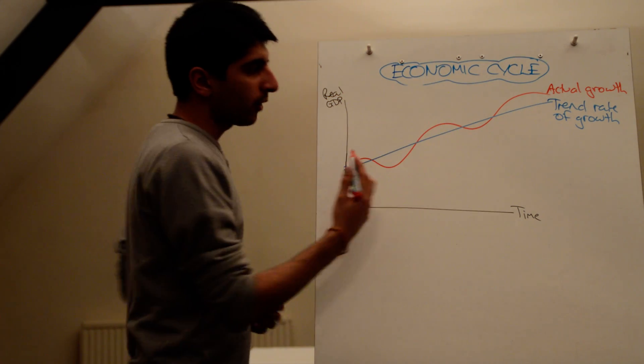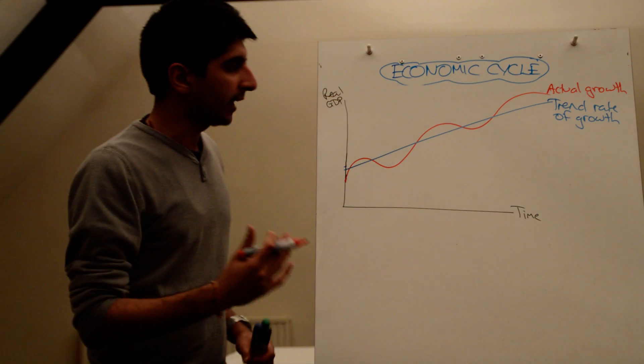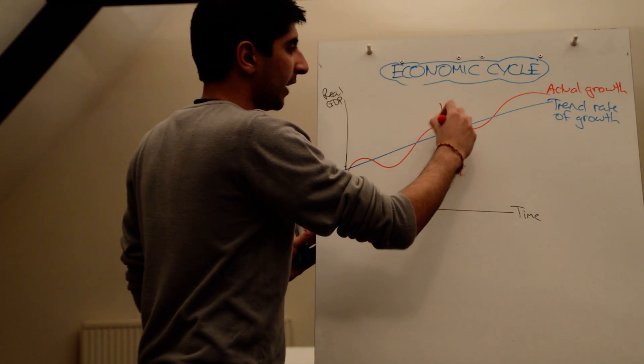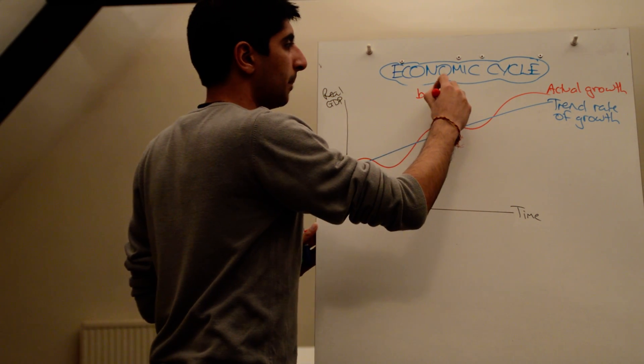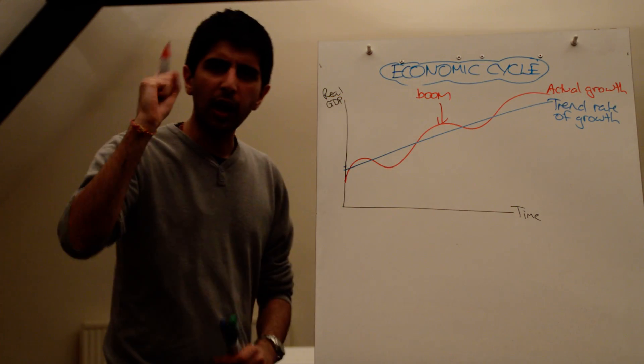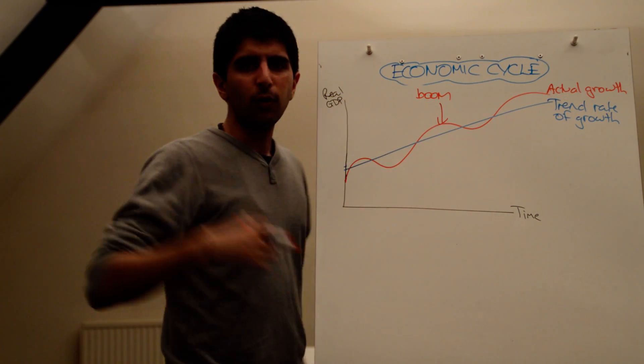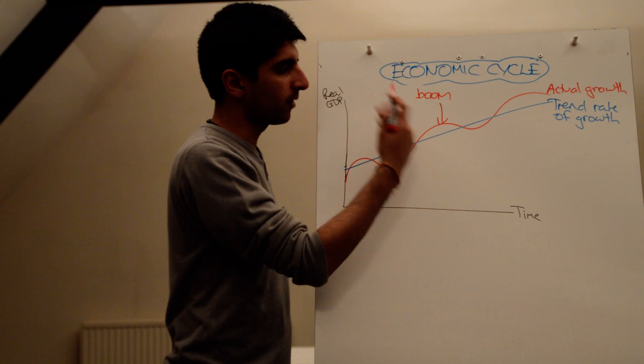So when we look at this diagram, we can split it up into four different sections. At the peak of actual growth, we are experiencing a boom. Rampant, high economic growth, normally with inflation at the same time. So we have a boom.